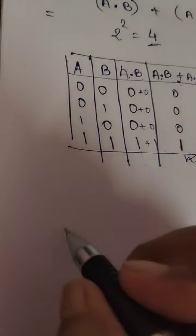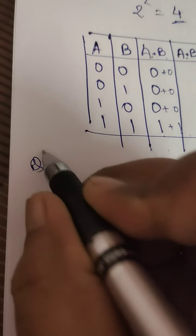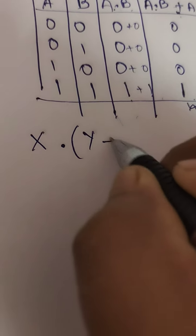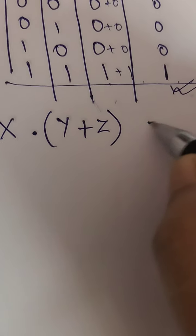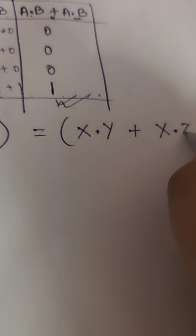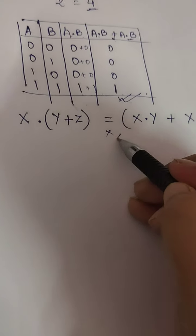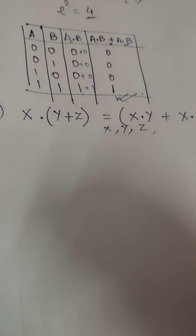Okay, now let me solve one question. One question is given where you need to prove x·(y+z) equals to x·y + x·z. We will prove this. How? Look, how many variables do you see? Three: x, y, z. How many total variables? Three. Then 2 to the power 3, the answer is 8. Now how will we make the truth table? Look.